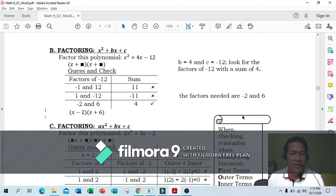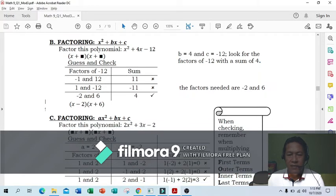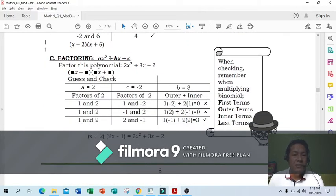Case C: Factoring ax squared plus bx plus c. Factor this polynomial: 2x squared plus 3x minus 2. This is more challenging. The quadratic term has coefficient 2, so you need 4 spaces. Factors of x squared are x times x, so you need 4. Factors of a: a equals 2.